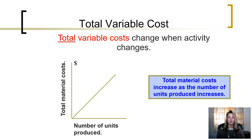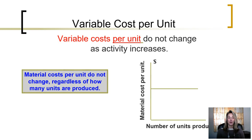If we were to reorganize all of a company's costs, some of their costs would be variable costs. Total variable costs change when the activity changes. For example, total material costs are variable costs — they increase as the number of units produced increases. However, on a per-unit basis, variable costs do not change as activity increases. Material costs per unit do not change regardless of how many units are produced; the variable cost per unit for materials is the same.